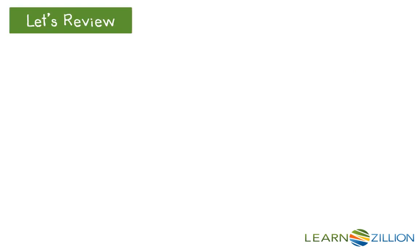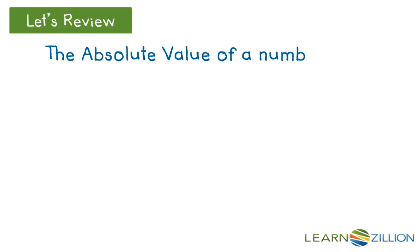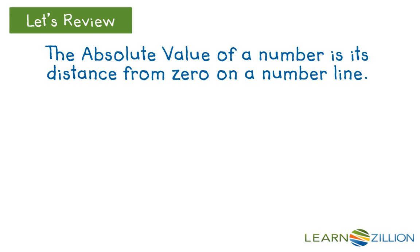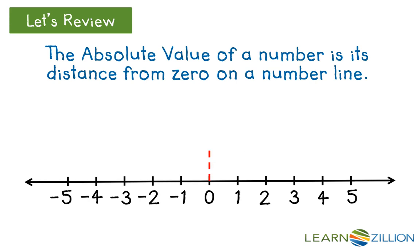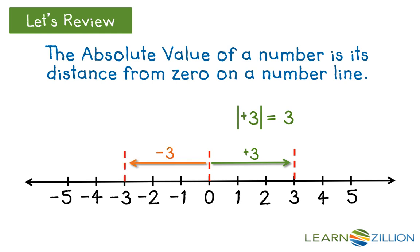Let's review. The absolute value of a number is its distance from 0 on a number line. For example, positive 3 is 3 units away from 0, and its absolute value is 3. Negative 3 is also 3 units away from 0, but in the opposite direction. Its absolute value is also 3.